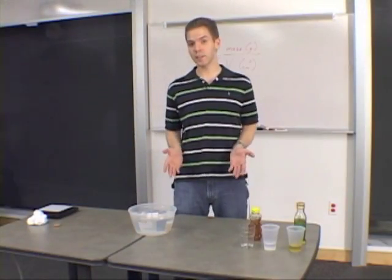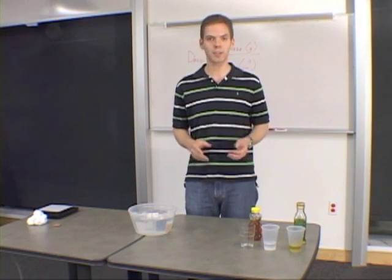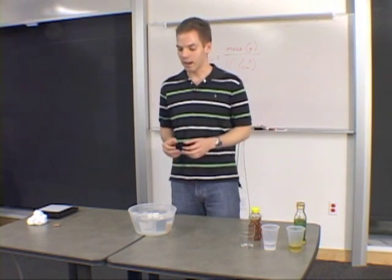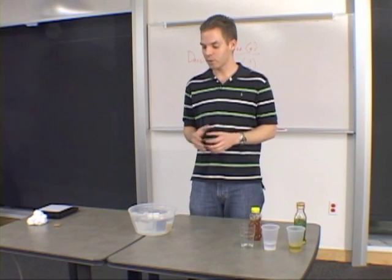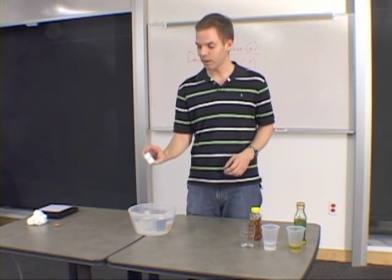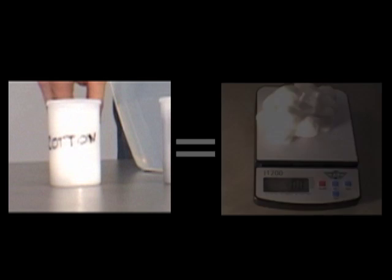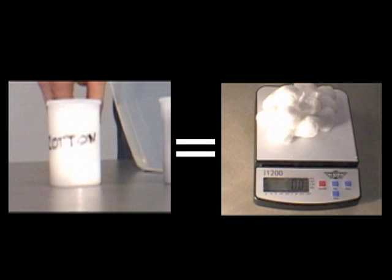Density is a material property, so it doesn't matter the shape or size of an object. If it's the same material between two different objects, it's going to have the same density. For example, the cotton balls here have the same density as the cotton balls from the first experiment. Because density doesn't change between a material, it's very useful to identify a material if you know its density.